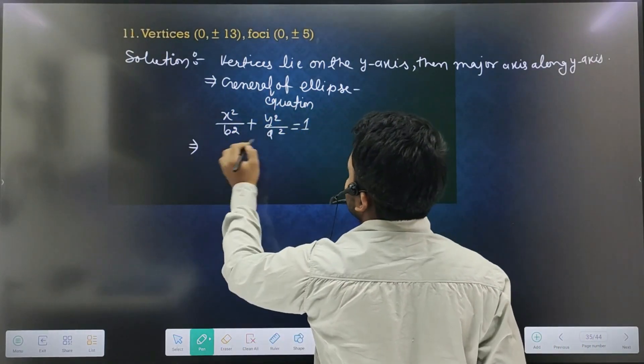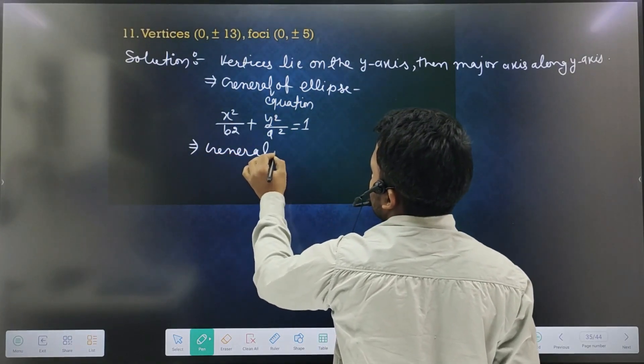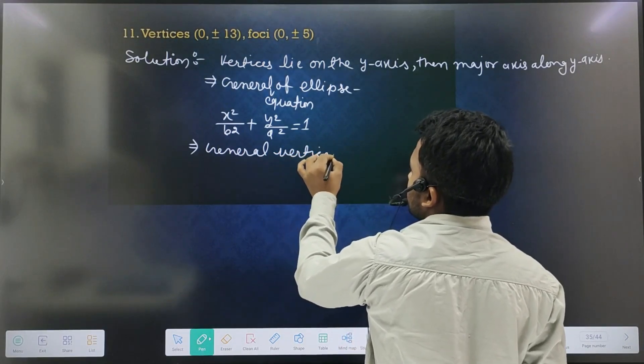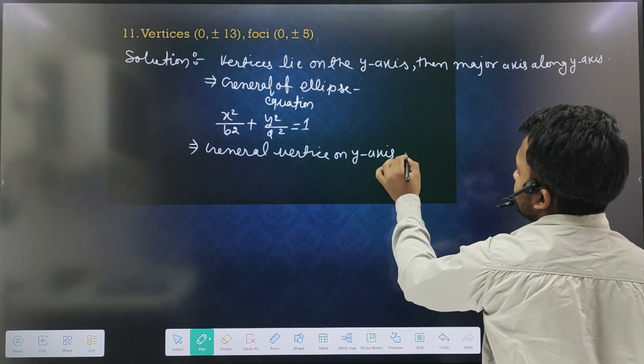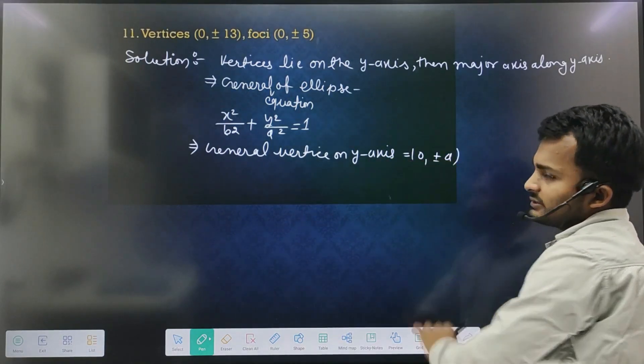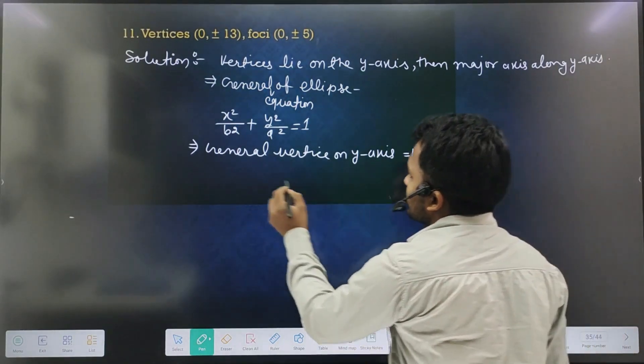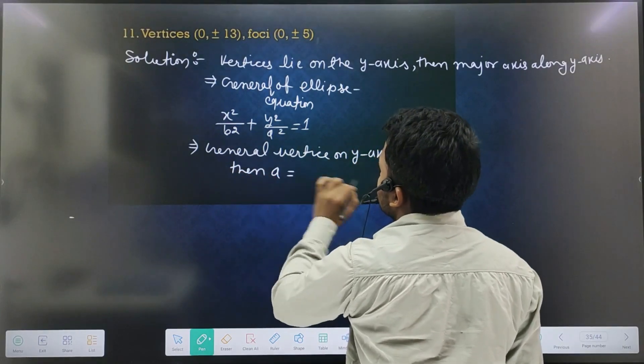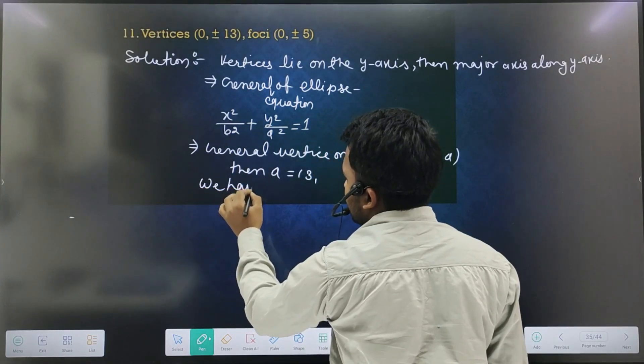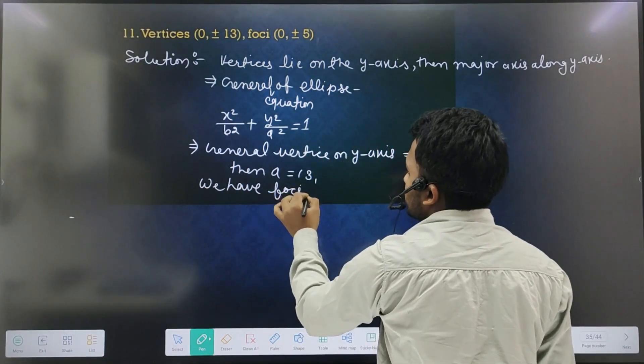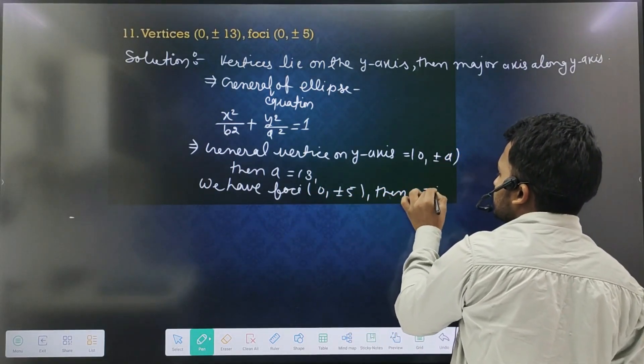So here we will see what is given. What is given? See, from vertex on y-axis, what is given? Equal to plus minus 1,0. So a equal to 13. Now here, what do we have? Foci is 5. Then c equal to 5.